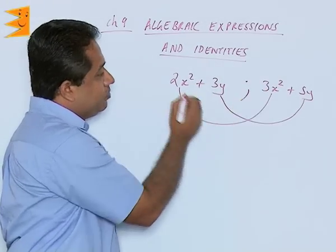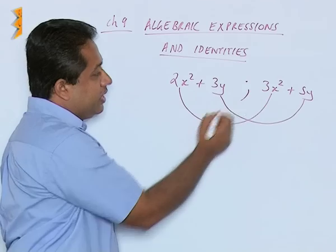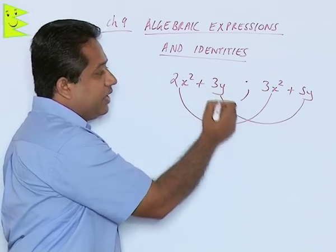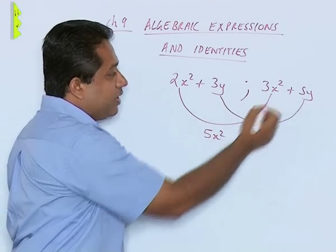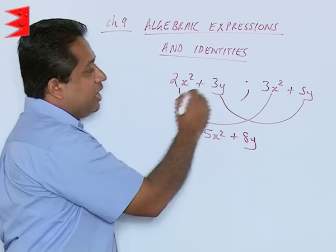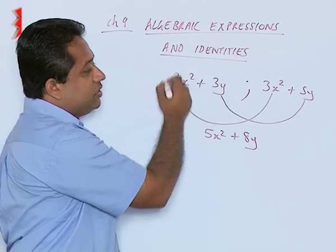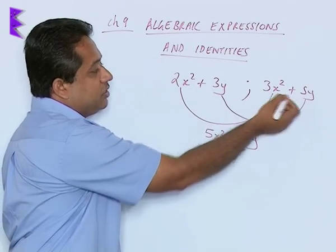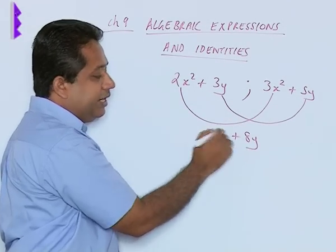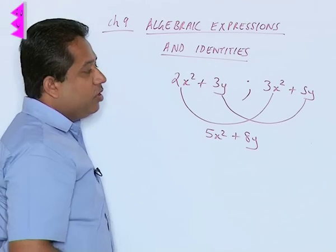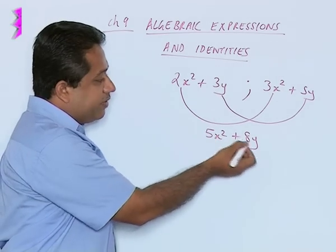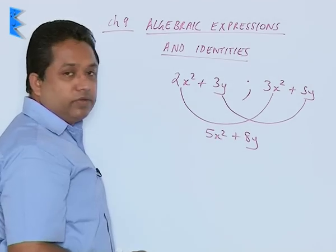When I add the like terms, 2x square and 3x square, we will get 5x square, and when I add 3y and 5y, I will get 8y. So, the answer of this plus this will be 5x square plus 8y. These are unlike terms, so we will not be able to add them further. The answer will be 5x square plus 8y.